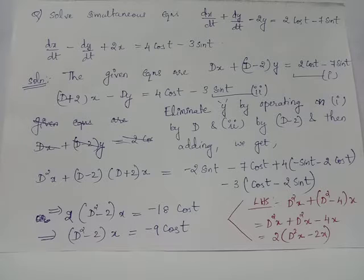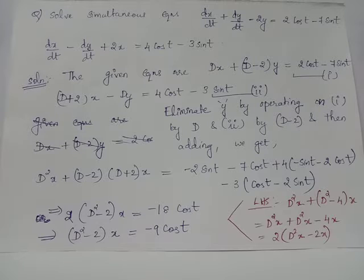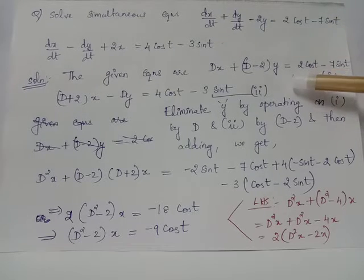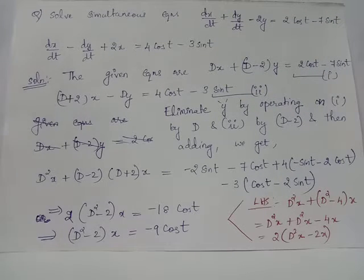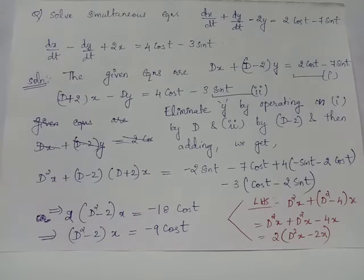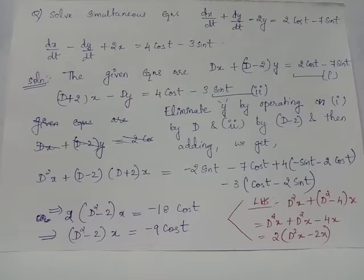In both the given differential equations, x and y are the dependent variables and t is the single independent variable. If we introduce the operator D = d/dt, then the first equation and the second equation can each be rewritten using operator notation. Let us call the new equations as equation 1 and 2 respectively.